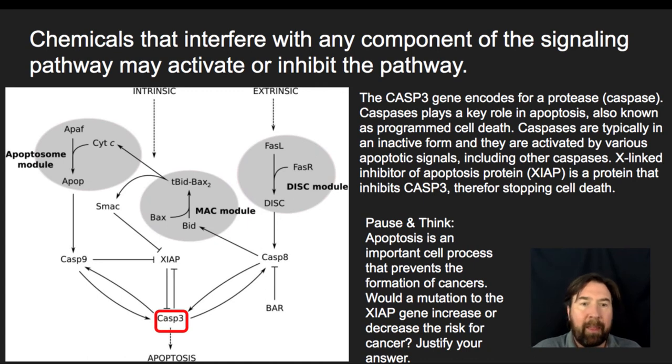Let me give you a little bit of background. We're going to focus in on caspase 3. The CASP3 gene encodes for a protease, which we're calling a caspase. Caspases play a key role in apoptosis, also known as programmed cell death. Caspases are typically in an inactive form, and they may be activated by various apoptotic signals, including from other caspases. There's also X-linked inhibitors of apoptosis protein, which is called XIAP. That is a protein that inhibits caspase 3, therefore stopping cell death. We have normally caspases which are involved in leading to apoptosis. We have this XIAP that's a protein that inhibits caspases.